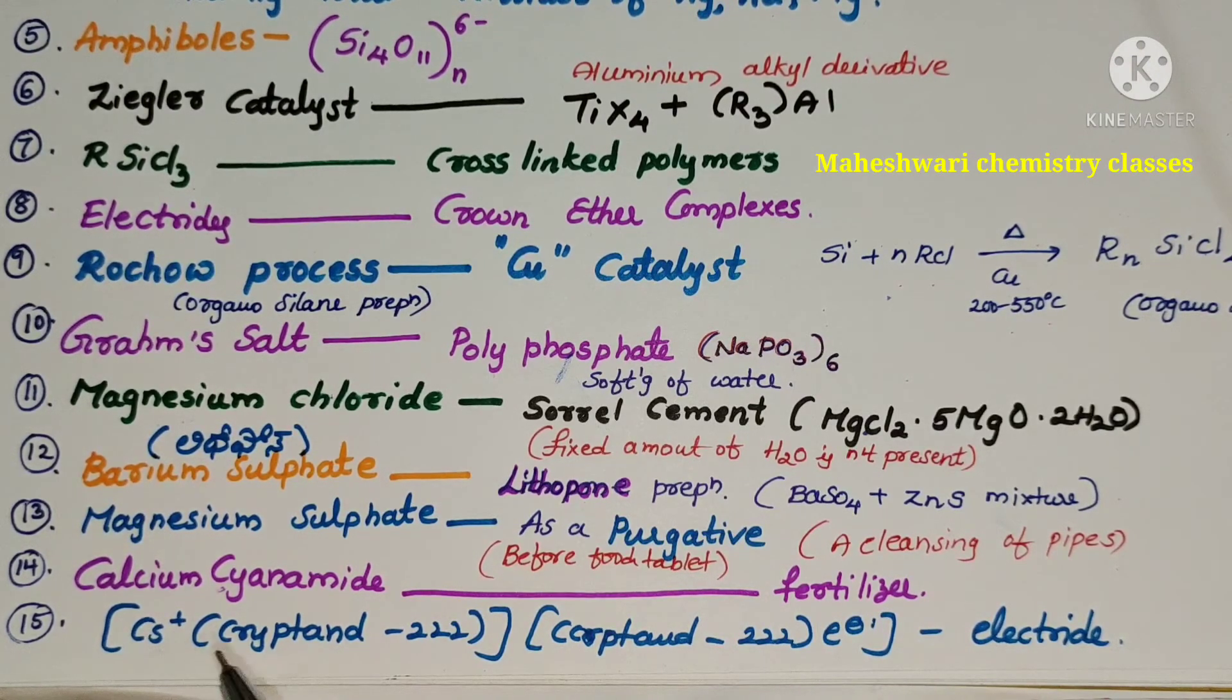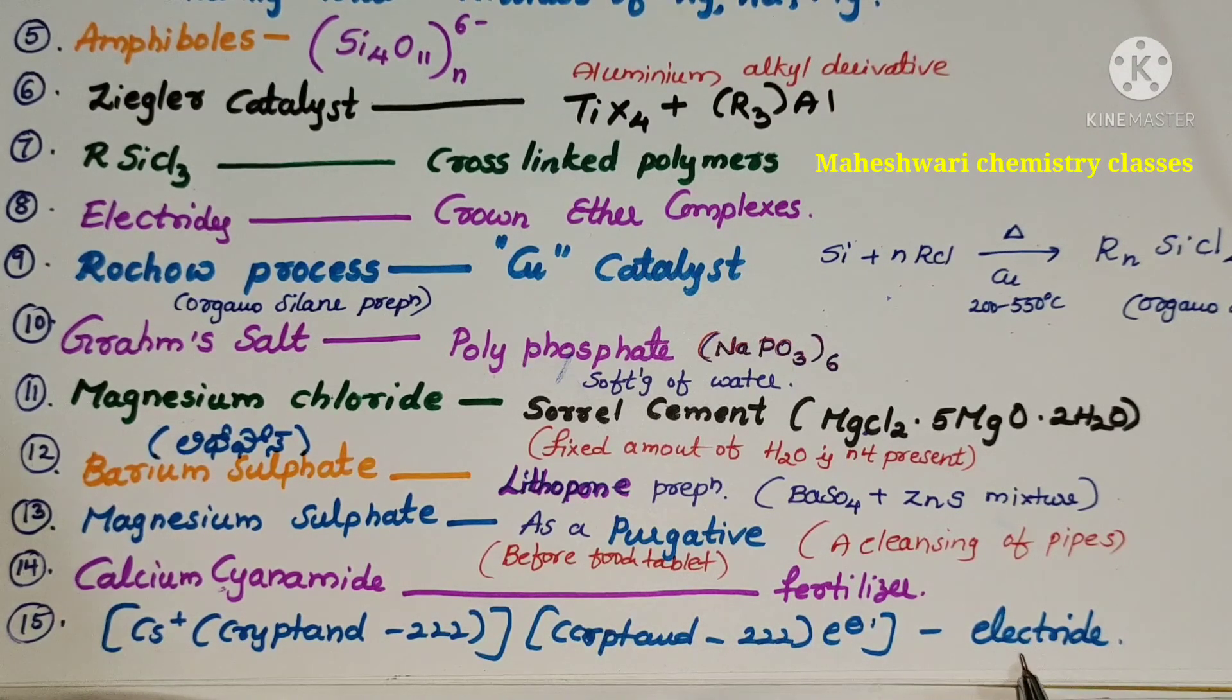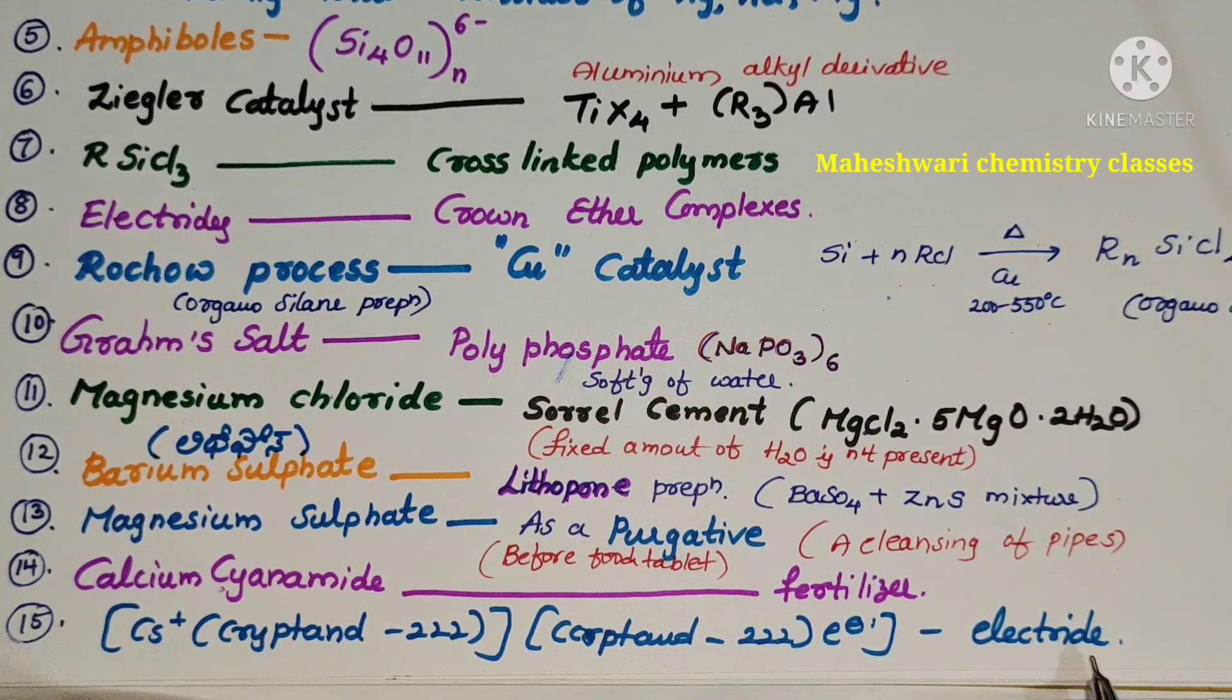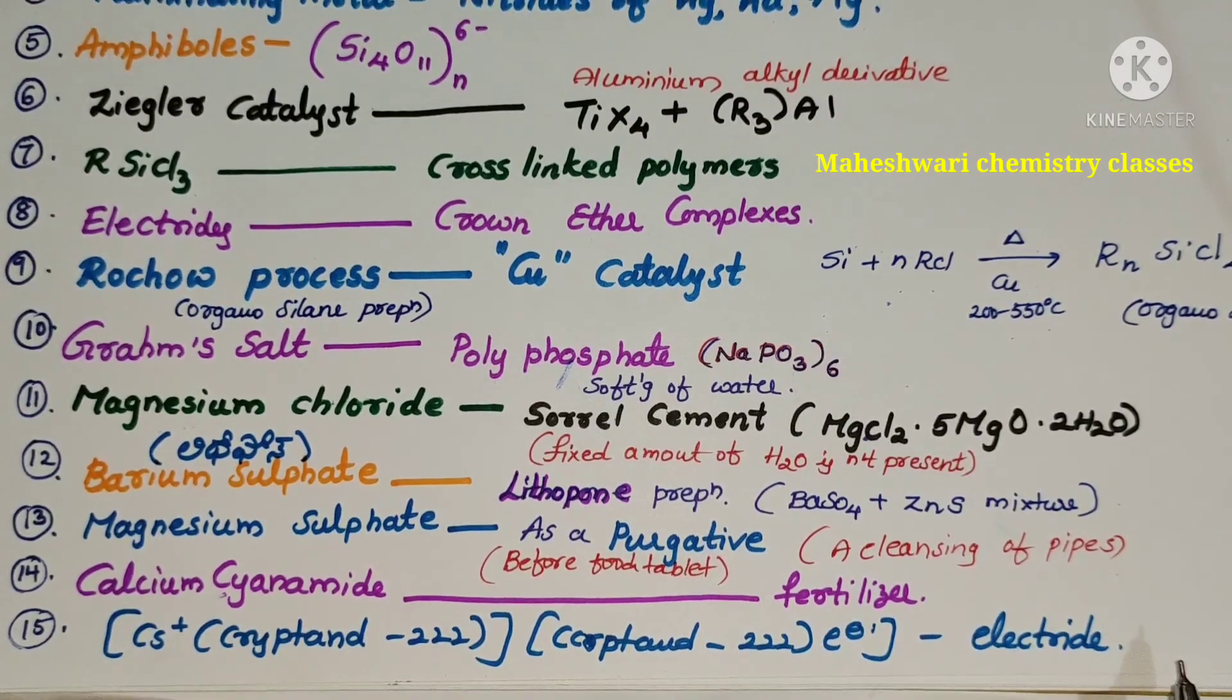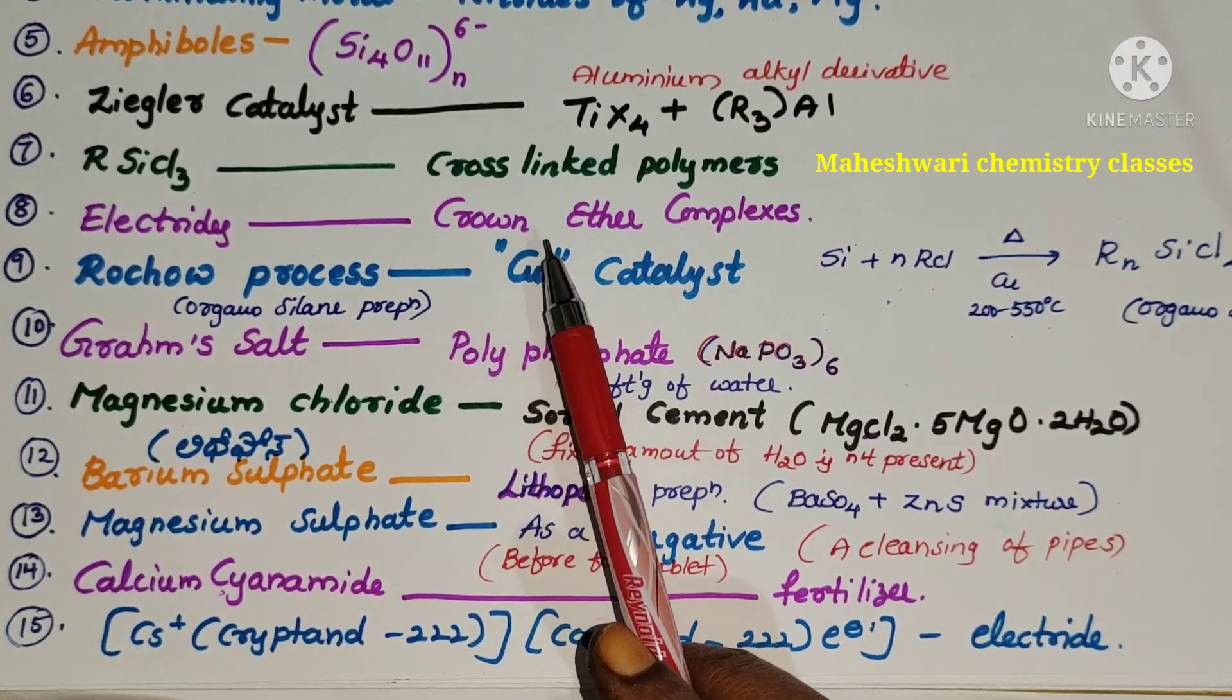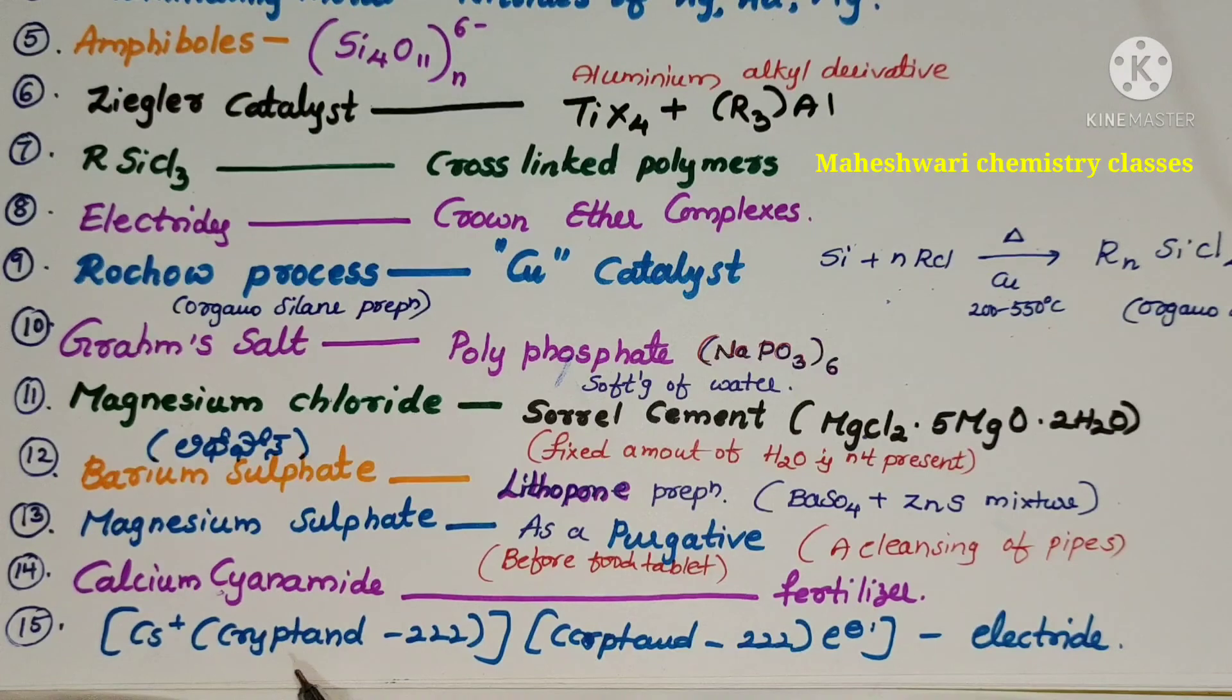Cesium plus krypton-2,2,2, krypton-2,2,2 electron, it works like an electride. This electride is present in crown ether complexes. You must remember it is one of the example for electride.